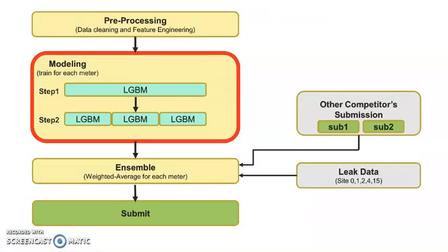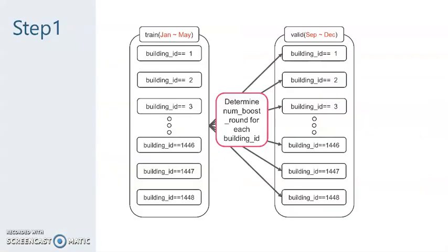Secondly, we will talk about modeling. We only used Light GBM as a regressor. We trained for each meter. And we also have a two-step trick in modeling. We will explain our trick. Our trick is determining numboost round for each building ID.